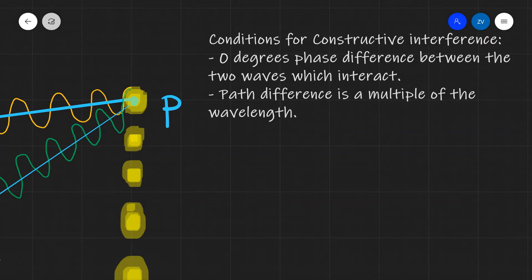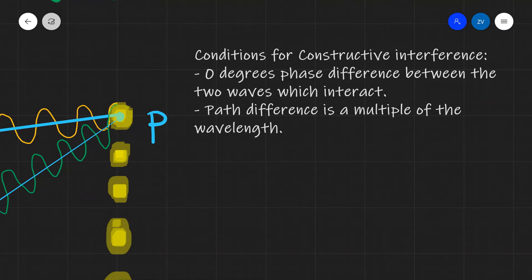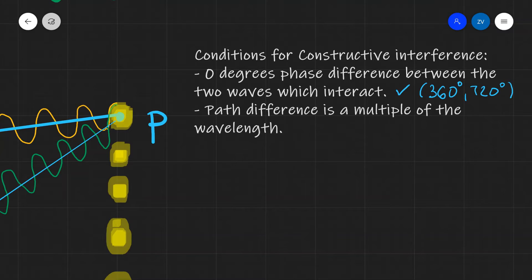There are two conditions for constructive interference at a point, and the first one relates to phase difference. Constructive interference occurs if the phase difference between the two interacting waves is zero degrees. Additionally, because zero degrees is equivalent to 360 degrees, or 720 degrees, any multiple of 360 degrees will also cause constructive interference, because at those phase differences the peak of one wave meets the peak of the other wave. The second condition is related to a quantity known as path difference, which is very different from phase difference.